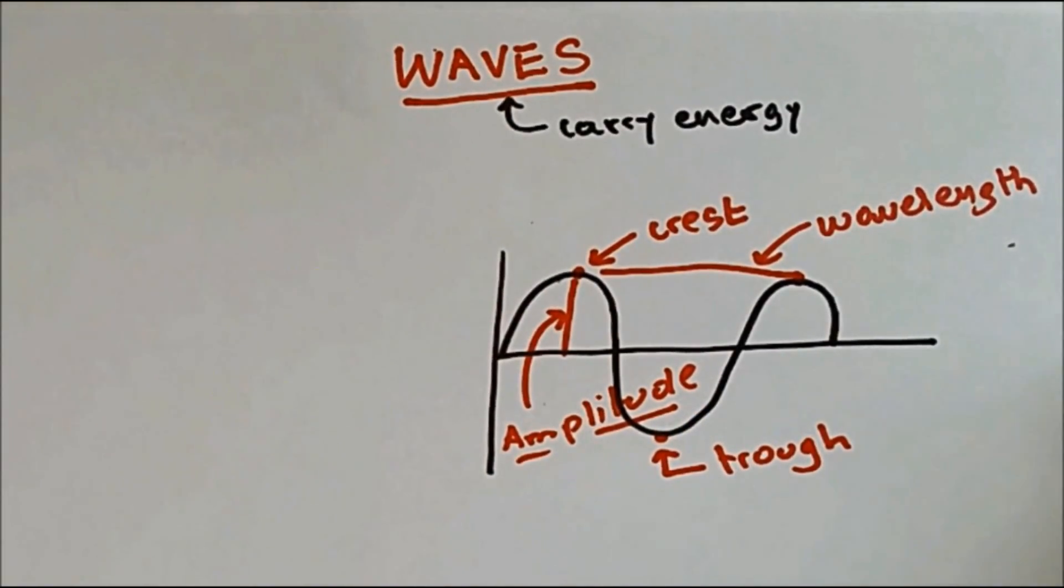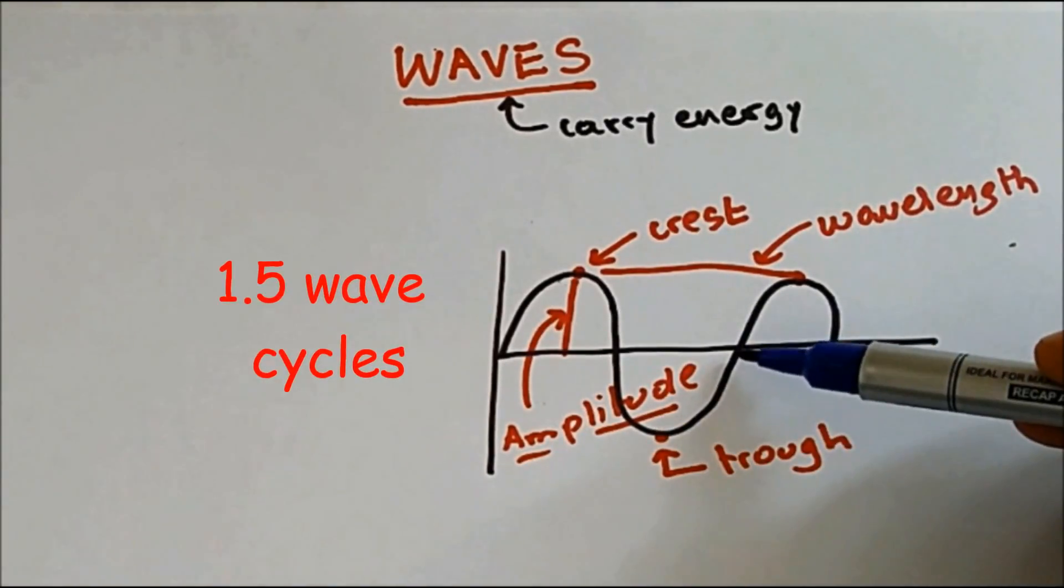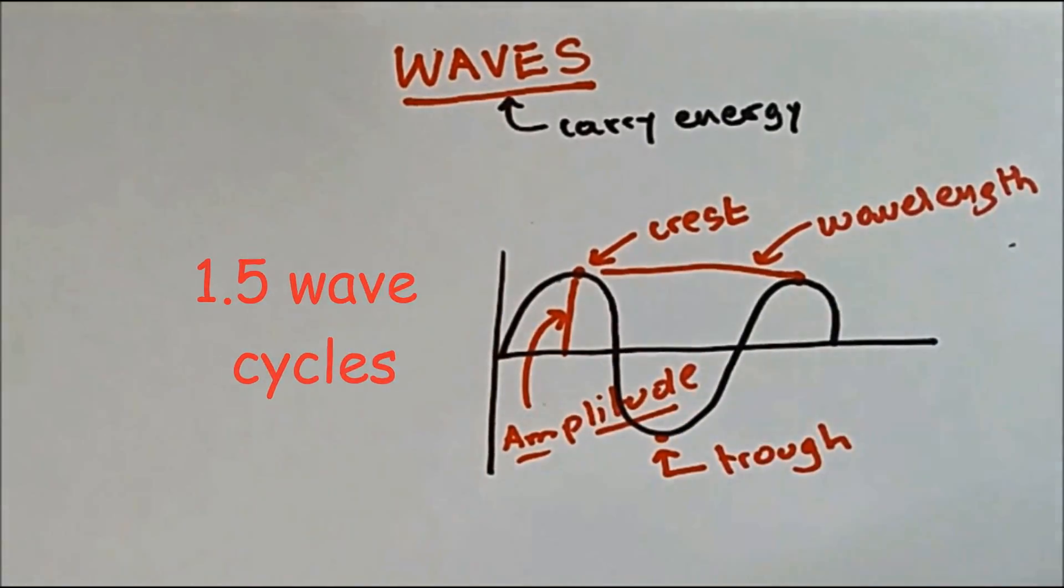And the height of the wave, which is from the middle to the crest, is called an amplitude. The number of wave cycles drawn over here is 1.5, or one and a half. The reason is because that is one and this is half.